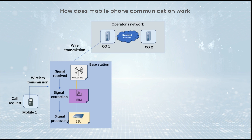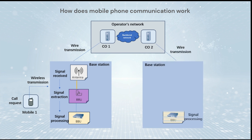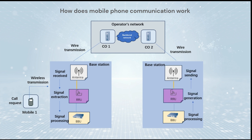After processing the received signal, another base station sends it to the other mobile terminal through an antenna, which completes the communication between two mobile devices.